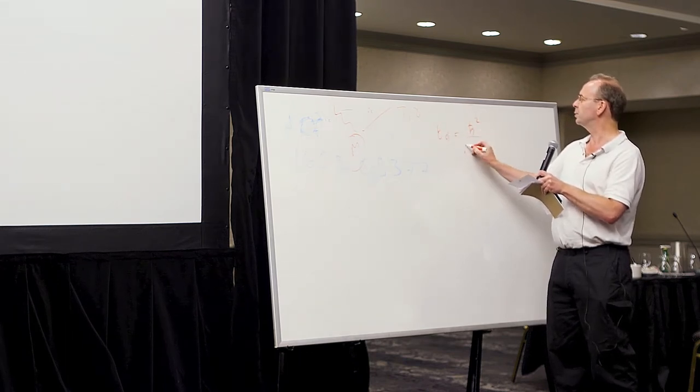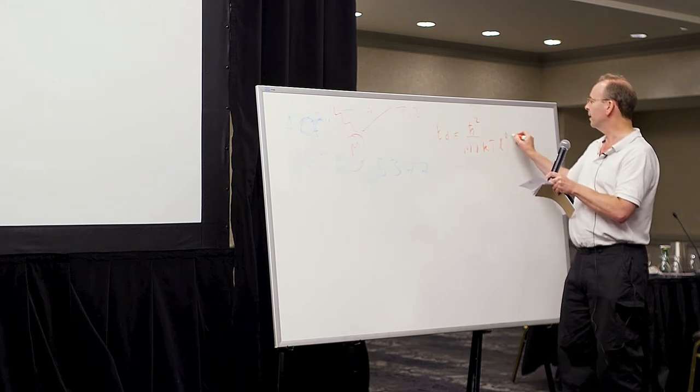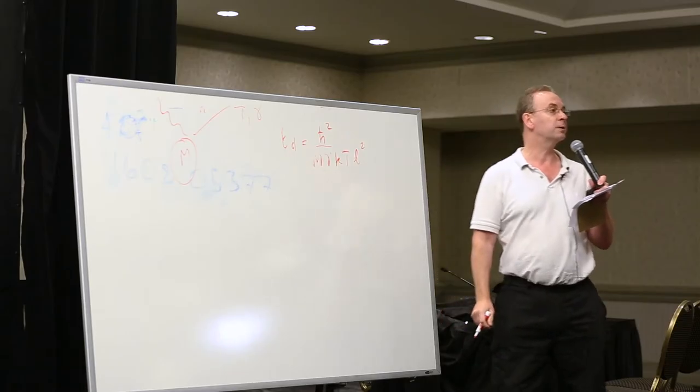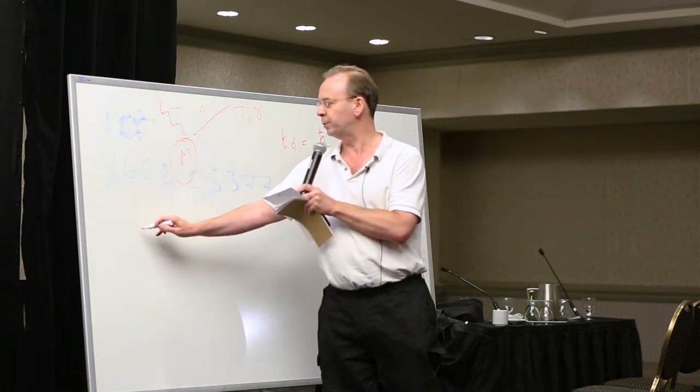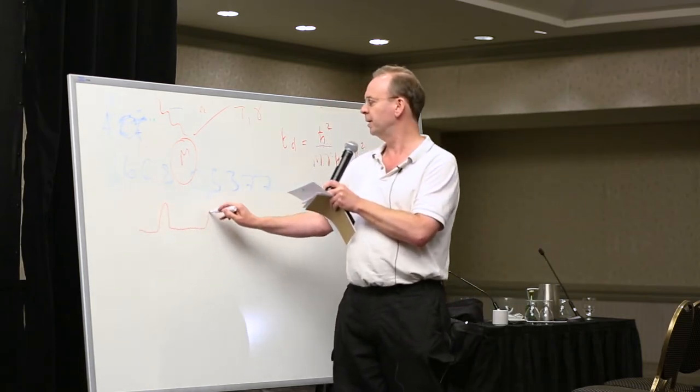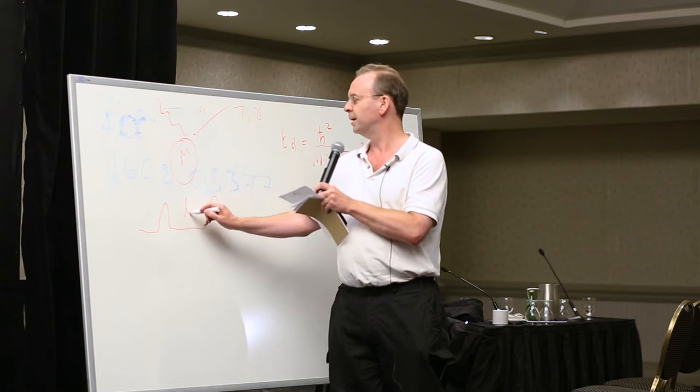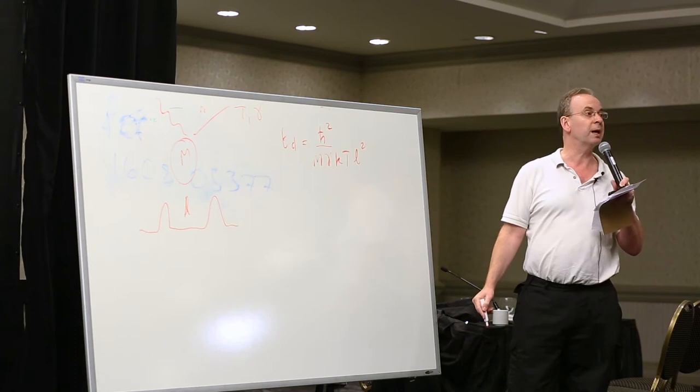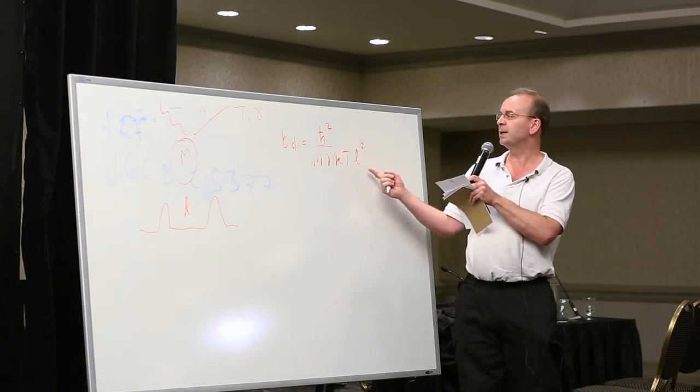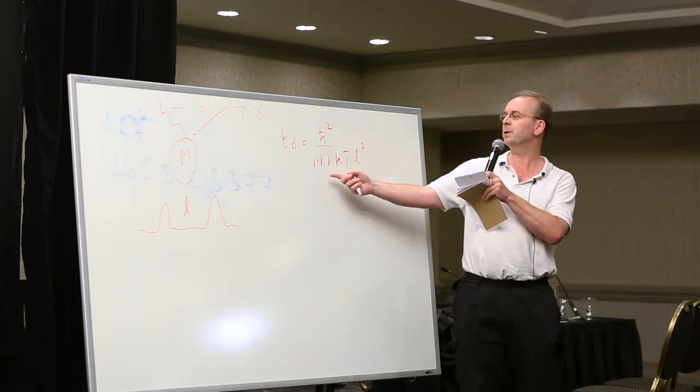h-bar squared over m gamma kT, and it always involves some sort of length scale in this situation. For example, when you're looking at interference and you have two packets separated by some length scale L, the distance is the distance between the two packets and when you put this in for typical macroscopic values of